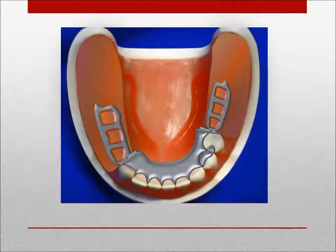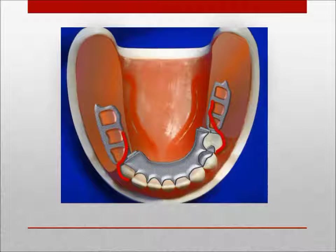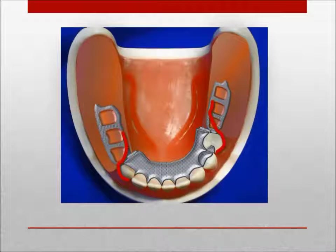A buccal frenal attachment interfering with the placement of a bar retainer is present on number 20. Molar retention can be attained with a flexible 19-gauge wrought wire clasp utilizing 0.02 inches of undercut. For symmetry, simplicity of design, and uniformity of retention, a similar clasp is used on number 27. The wrought wire is easy to adjust and may be used in most situations.